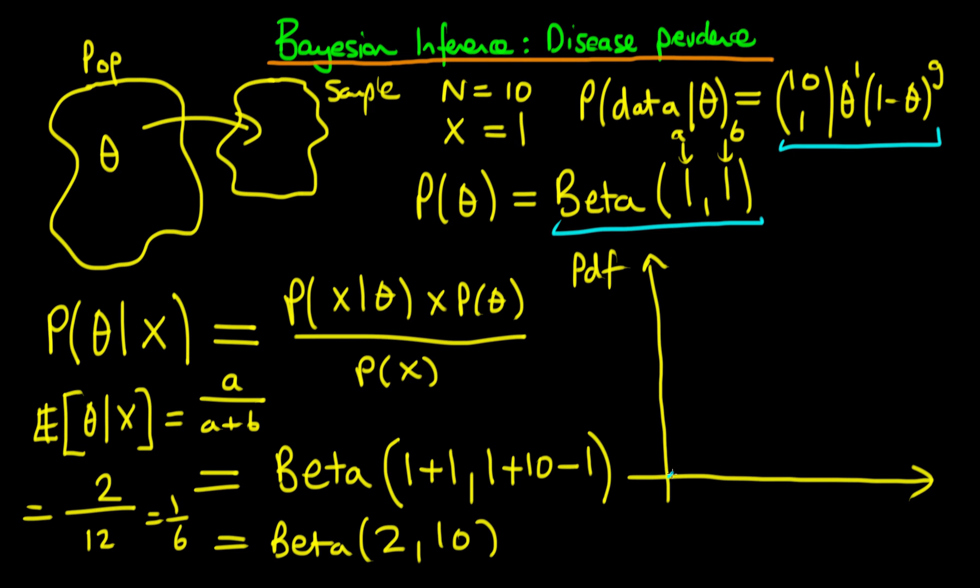So our distribution is going to look something perhaps like the blue line which I'm drawing here. So it's going to be very strongly peaked to the left of the 0.5 marker, even though the fact that we have specified a completely uniform prior to begin with.